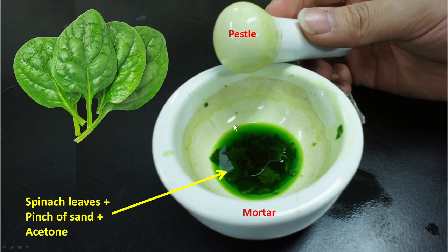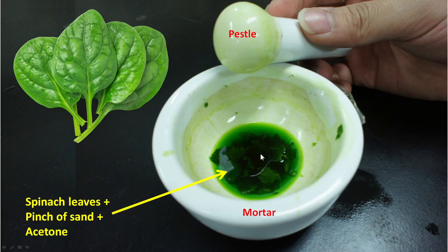For the procedure, we have to grind the material using a mortar and pestle. We use spinach leaves to grind. While grinding, we add a pinch of salt and a pinch of sand, along with a little bit of acetone, depending upon how many leaves you take.